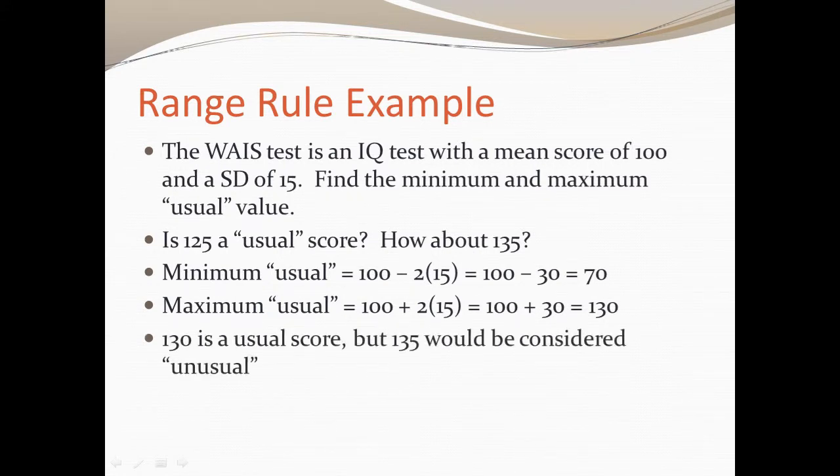Therefore, with our minimum and maximum usual scores, 125 would be a usual score, but 135 would be considered unusual.